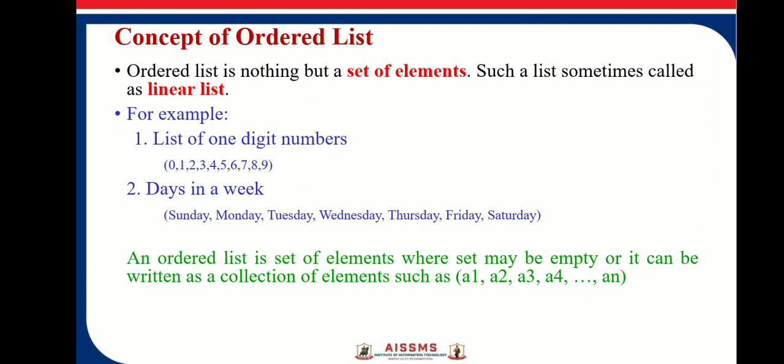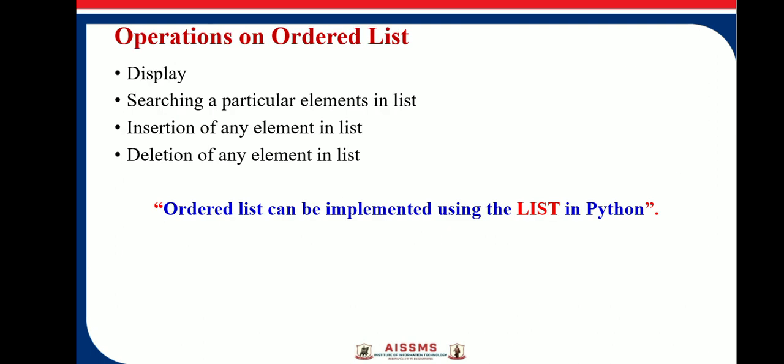There are a few operations on an ordered list: display, searching an element, insertion of any element in a list, and deletion of any element from the list. An ordered list can be implemented using the list in Python, so for Python programming we will use list as an ordered list.